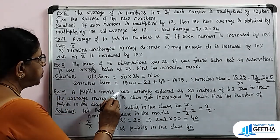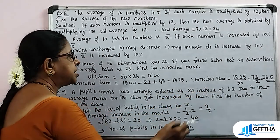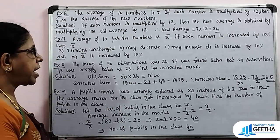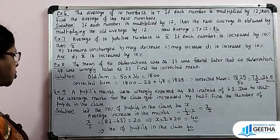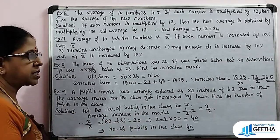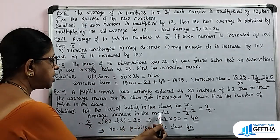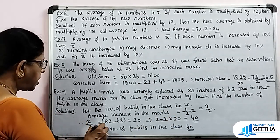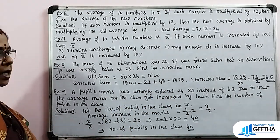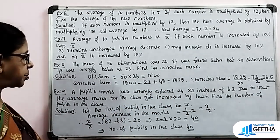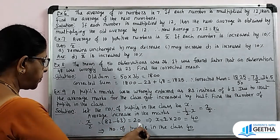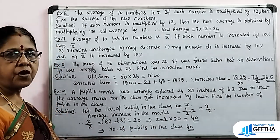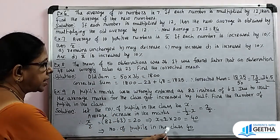Exercise number 9: A pupil's mark was wrongly entered as 83 instead of 63. Due to that, the average marks for the class got increased by half. Find the number of pupils in the class. Let the number of pupils be x. The increase in average multiplied by x equals the difference in marks: x by 2 equals 83 minus 63, that is 20. Therefore x equals 2 into 20, which is 40. The number of pupils in the class is 40.